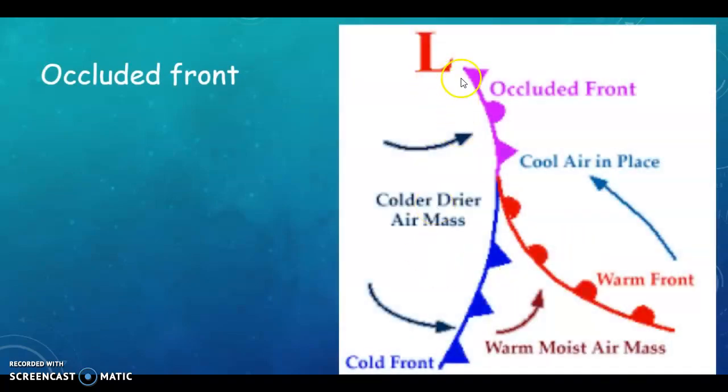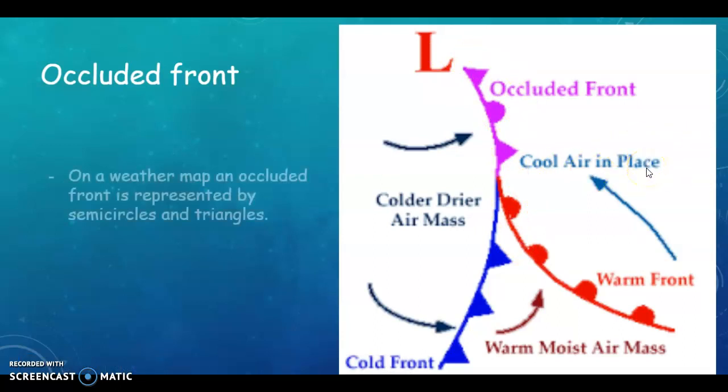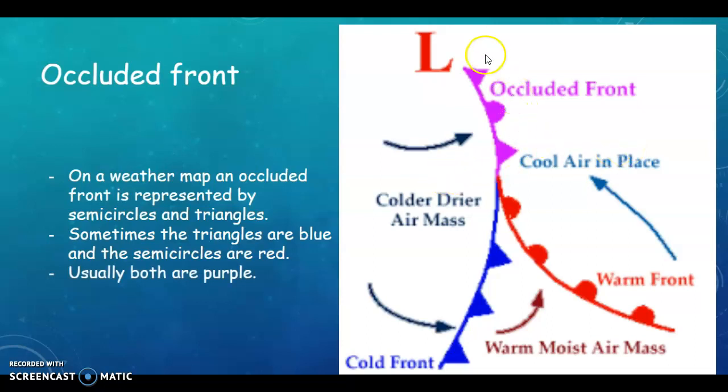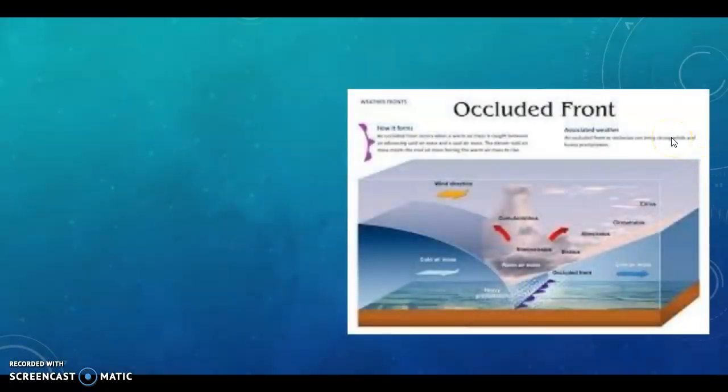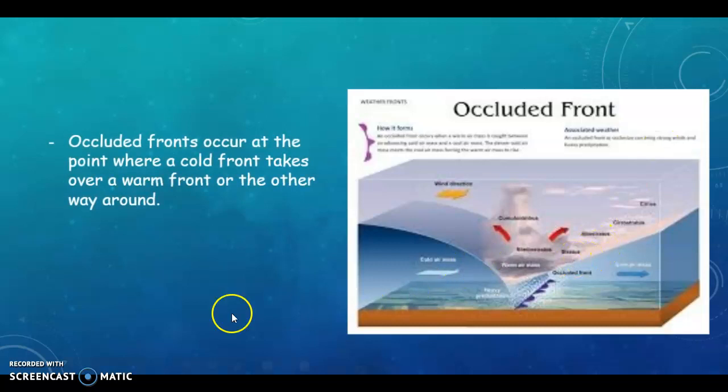An occluded front. So this is your occluded front up here. And you can already guess that because there's a mixture of your blue triangles and your red semicircles, giving you purple colour, you're going to have mixed or changeable weather. So on a weather map, an occluded front is represented by semicircles and triangles. Sometimes the triangles are blue and the semicircles are red, but more often now they're shown as this purple front.